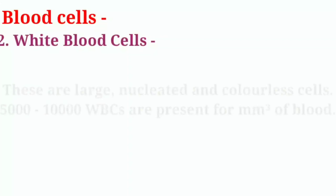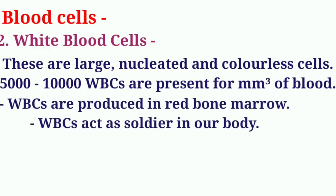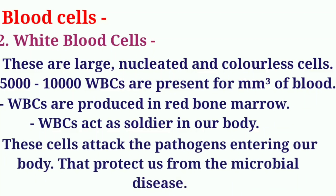White blood cells (WBCs) are large, nucleated, and colorless cells. 5000 to 10000 WBCs are present per cubic millimeter of blood. WBCs are produced in red bone marrow. WBCs act as soldiers in our body; these cells attack pathogens entering our body and protect us from microbial disease.